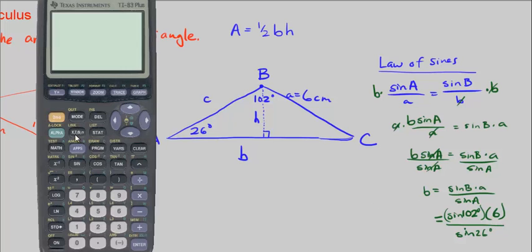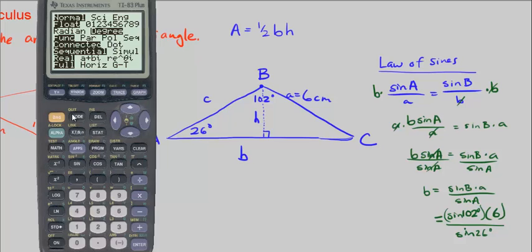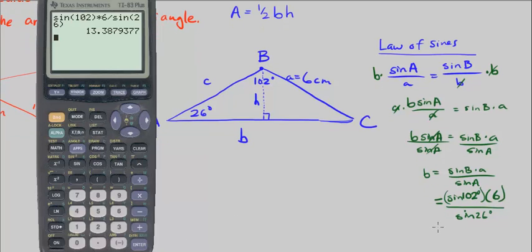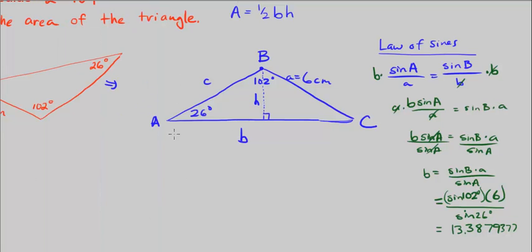Let me go ahead and bring out my calculator. Make sure what mode I'm in because I want to be in degrees mode. And I'm in degrees mode. So let's go ahead and find out what this is. Sine of 102 times 6 divided by sine of 26 degrees. So I know that the base of my triangle here is equal to 13.3879377. I can round this, but I'm going to just get a lot of accuracy time finding my final area. I'll round at the very end. So not in these steps in between.